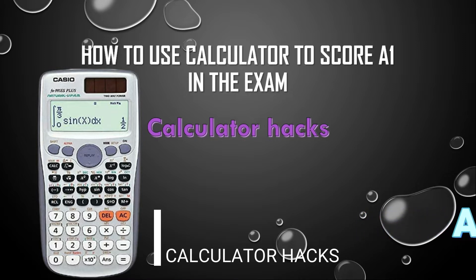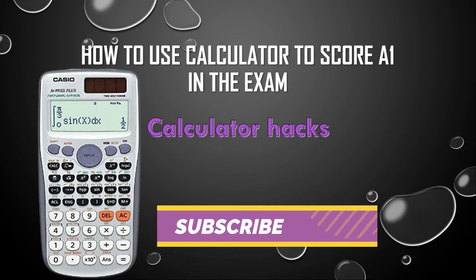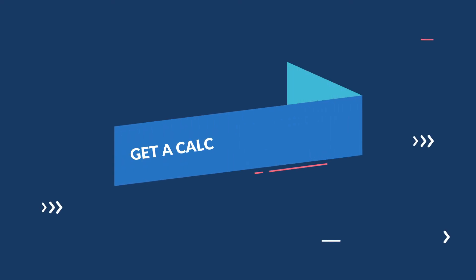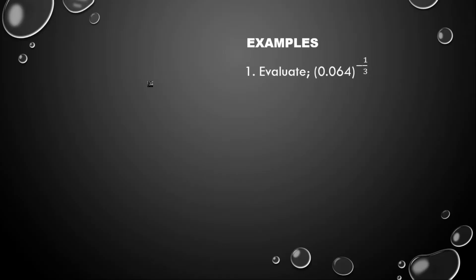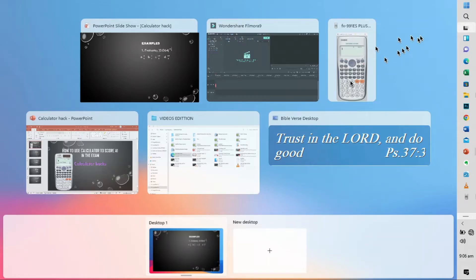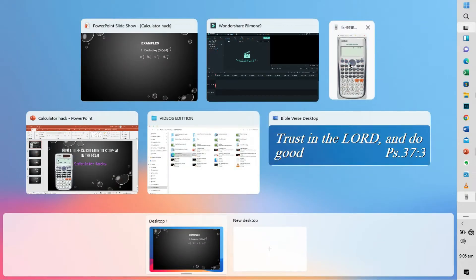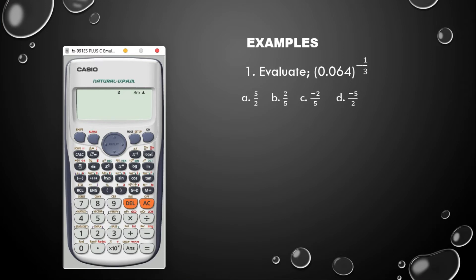Alright, without much ado, let's take our first example which we shall use the calculator to solve. Example one: evaluate 0.064 exponent negative 1 on 3, and these are the objective possible answers given to us. So let's pick the calculator and then we shall key in the values and see the possible answers.